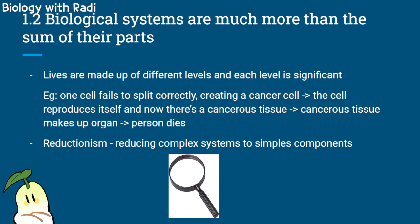Going off of that concept, reductionism is the idea of reducing complex systems to simpler components to make things easier to study. When you open a biology textbook, you're not going to start with the digestive system. You'll start with things like what lives are made of — cells. You have to learn what a cell is to understand how a cell's properties impact higher levels of life, such as organs.